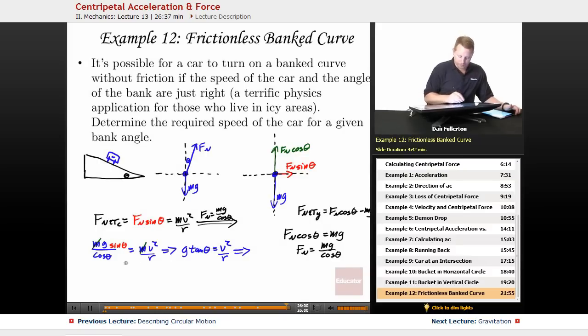Or to solve for the velocity, v squared equals gr tangent of theta. Or to get v by itself, take the square root, v equals the square root of gr tangent of theta.